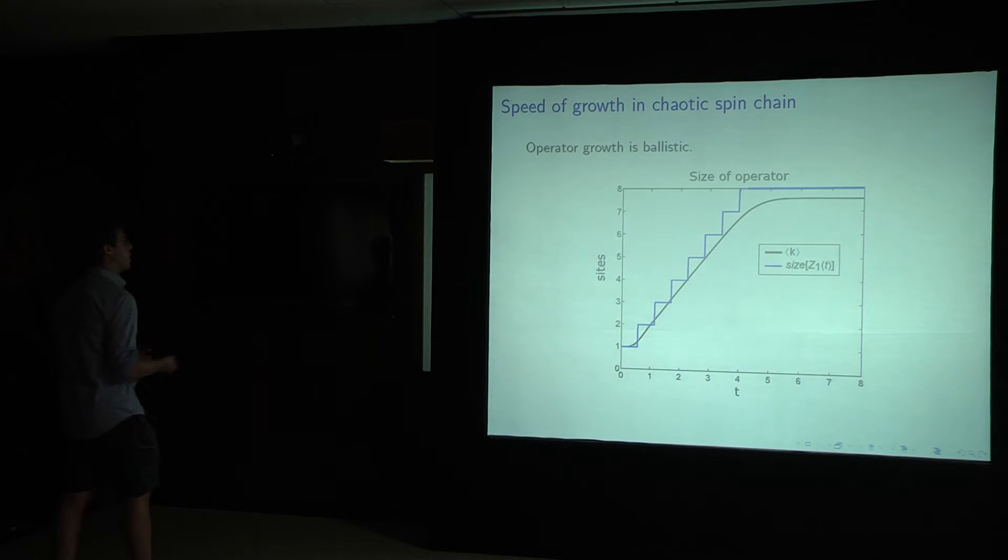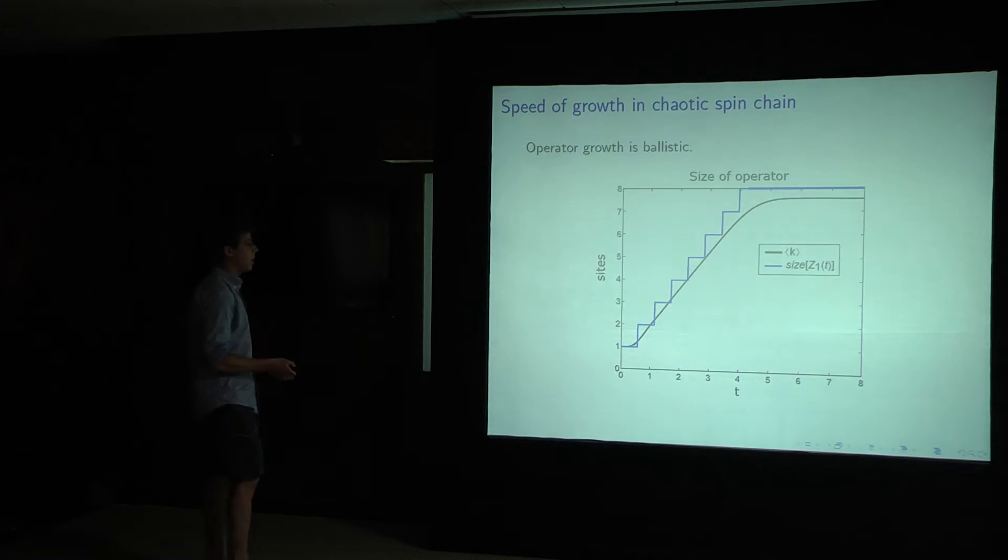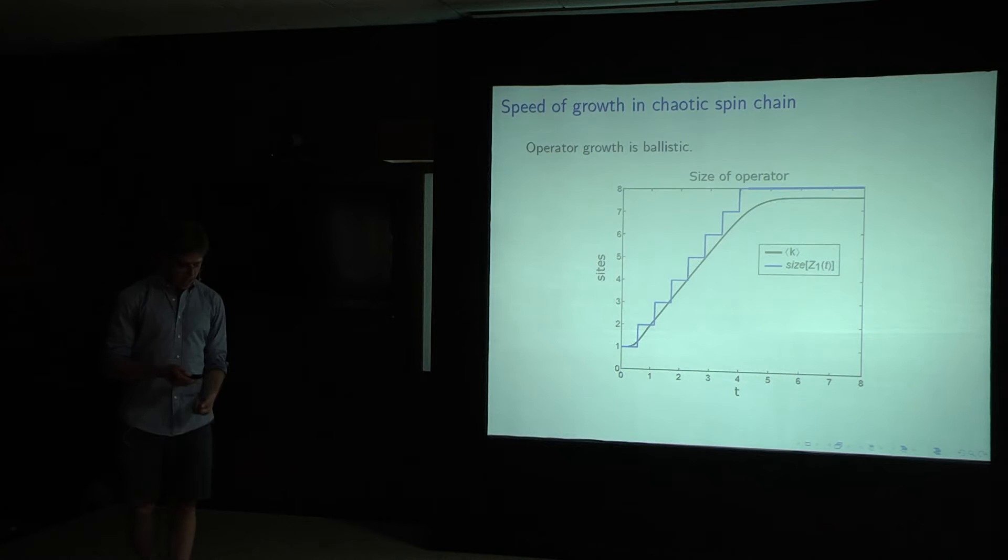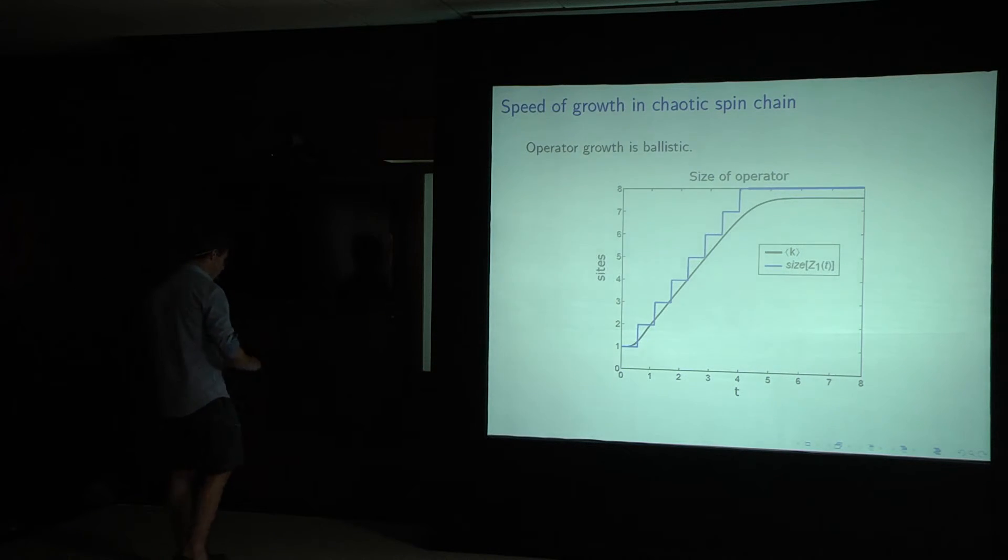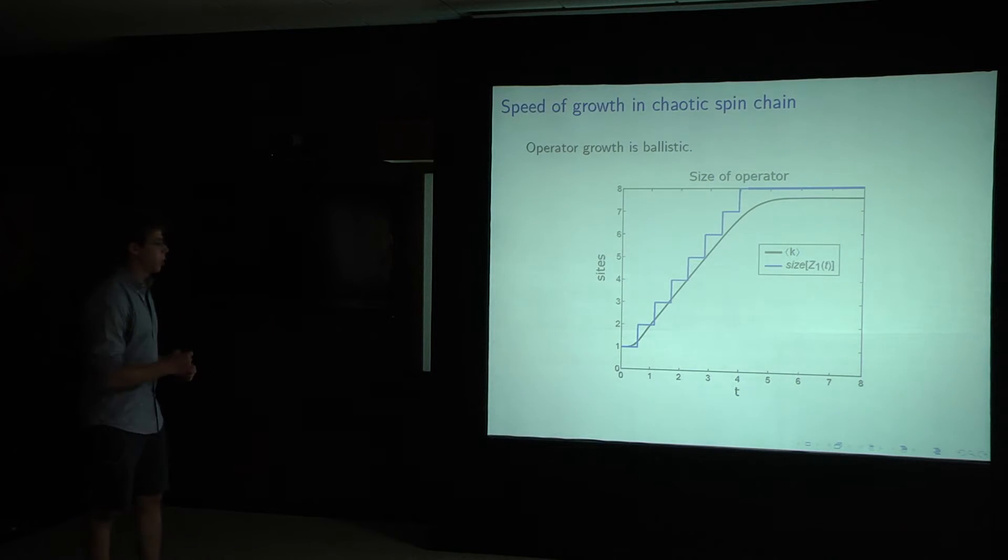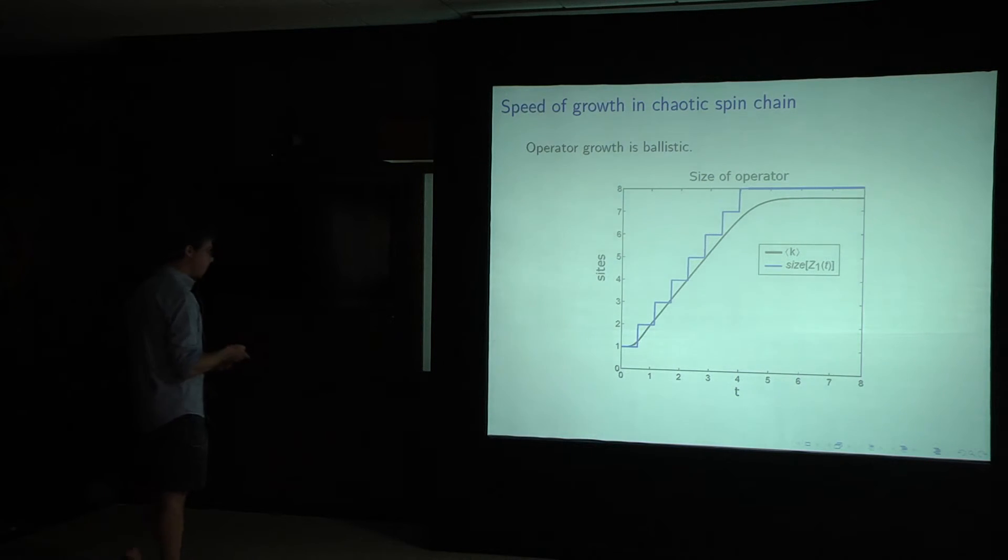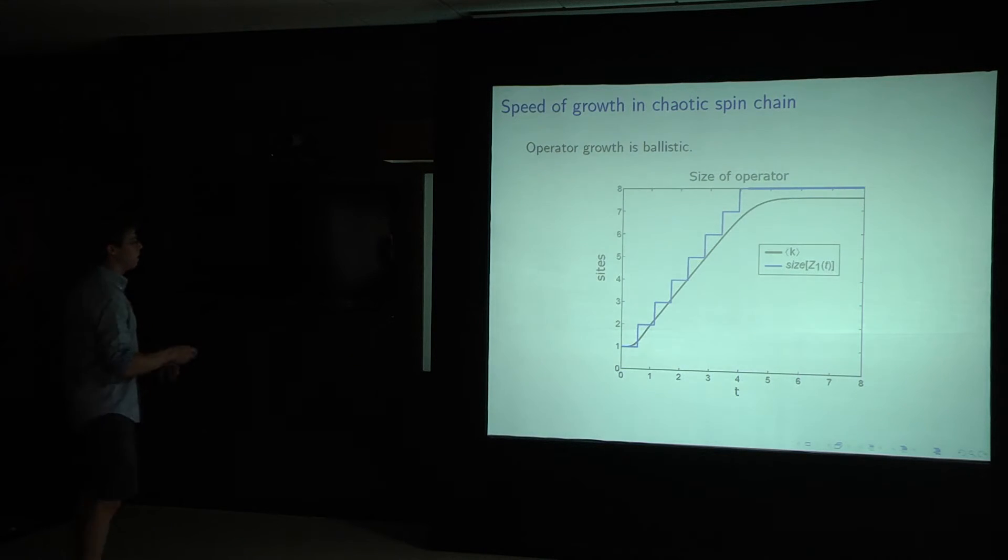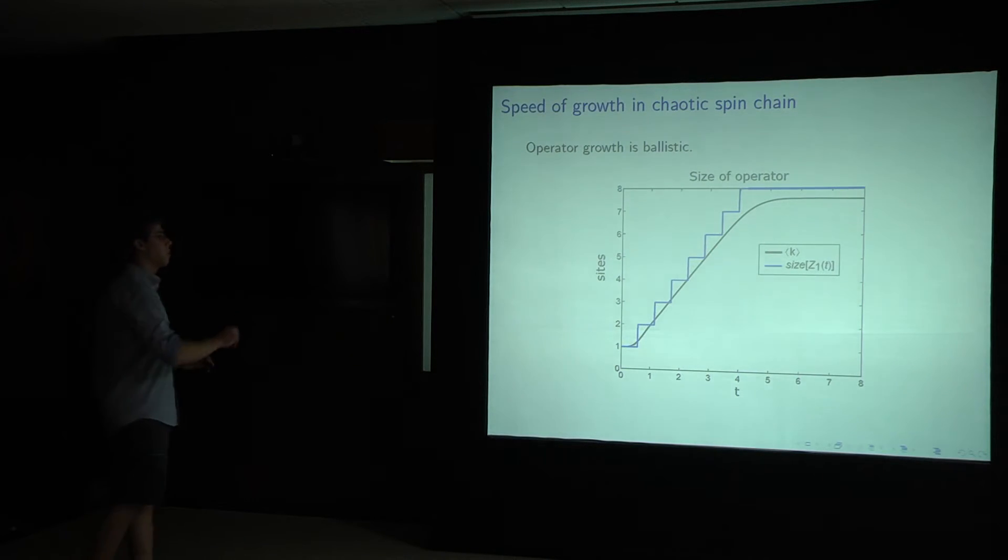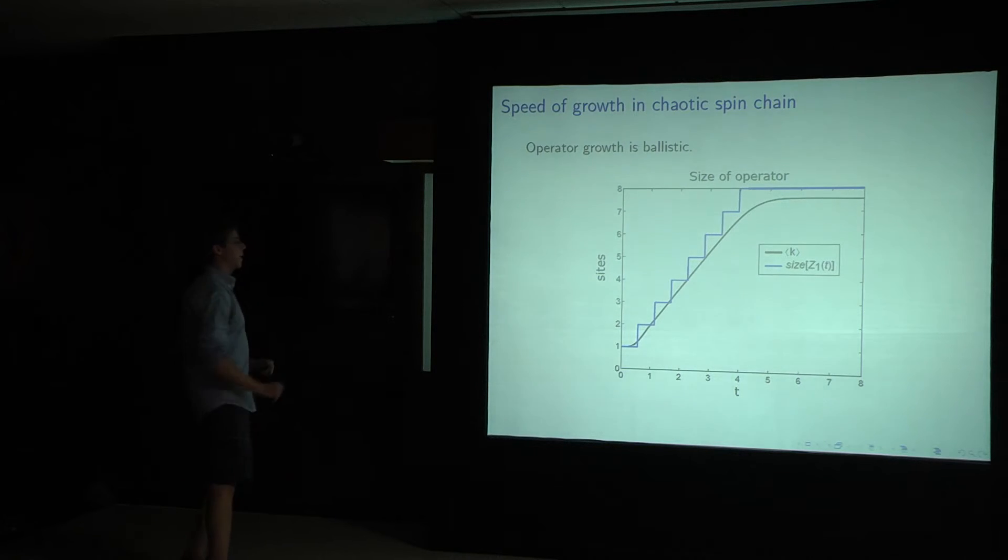And this is the answer. It's ballistic or linear. Here, I have plotted both notions of size. The commutator definition, the way I've defined it, only takes integer values for the discrete spin chain system. But we see they basically agree entirely, and we get this nice linear growth until the operator grows to be the size of the system, which is 8, at which point it saturates and stops.